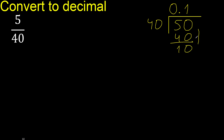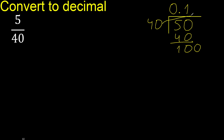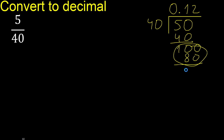There is no number that goes down, therefore complete — always complete with 0. The point is here. Now with 100: 40 multiplied by what number? Multiplied by 3 is 120 — that is greater, excessive. Multiplied by 2 is 80. Subtract, the remainder is 20.